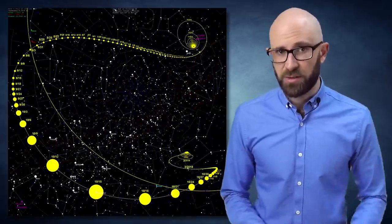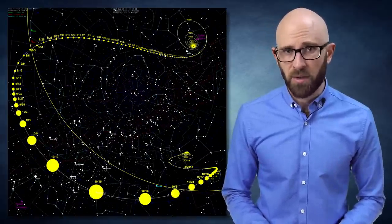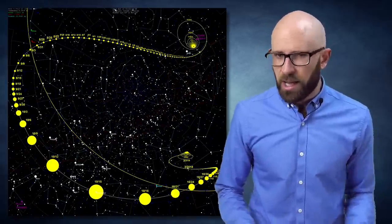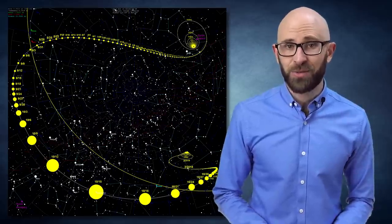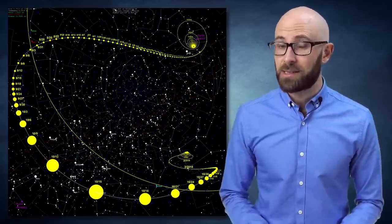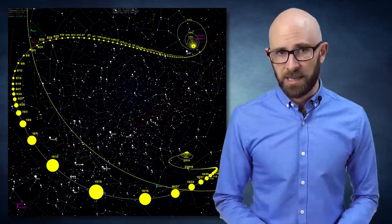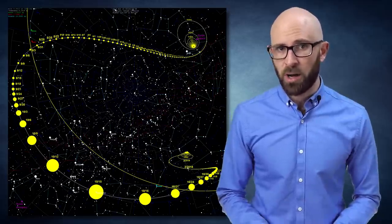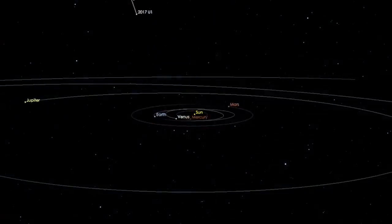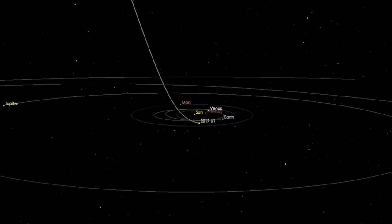In earlier simulations, Oumuamua's trajectory was tracked back to the bright star Vega in the constellation of Lyra. However, because it would have taken 300,000 years to reach us even at such speeds, Vega wouldn't have been in the same position when Oumuamua was supposed to have left. Wherever the object originated, it's likely to have been ejected from the debris surrounding a young star, also known as a protoplanetary disk, hundreds of millions of years ago.